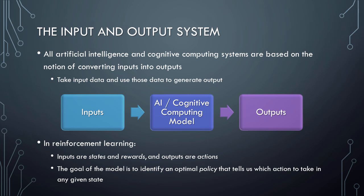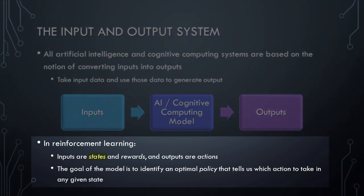While the input and output system is familiar and simple to understand, we need to know the appropriate vocabulary for these concepts in the context of reinforcement learning. Specifically, in reinforcement learning, the inputs are states, which you can think of as referring to the state of the environment, and rewards, which we will discuss in a few moments. The outputs in reinforcement learning are called actions. You can think of actions as answers to the question: what should I do next? The goal of a reinforcement learning model, then, is to identify an optimal policy that tells us which action to take in any given state.